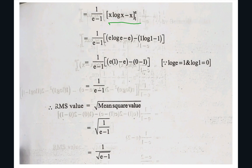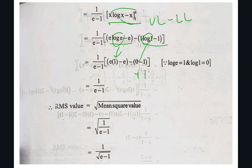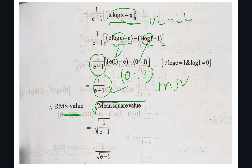We got x·log x − x for the integration of log x. Now substitute upper limit e minus lower limit 1: [e·log e − e] − [1·log 1 − 1]. log e = 1 and log 1 = 0, so this becomes [e·1 − e] − [0 − 1] = 0 + 1 = 1. With b minus a = e − 1, the mean square value is 1/(e−1). The root mean square value is therefore 1/√(e−1).